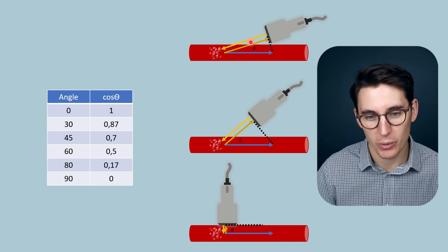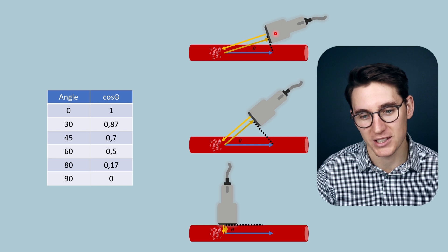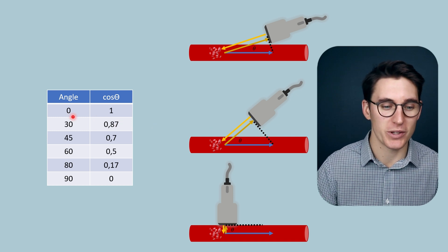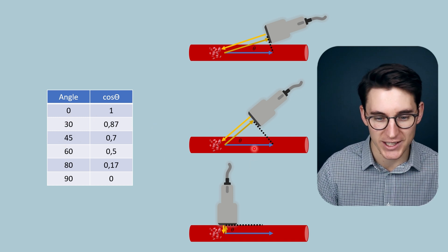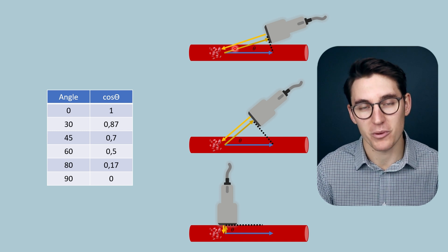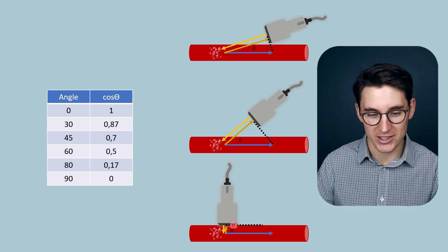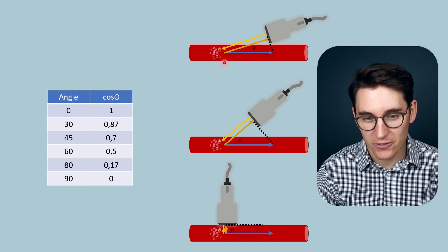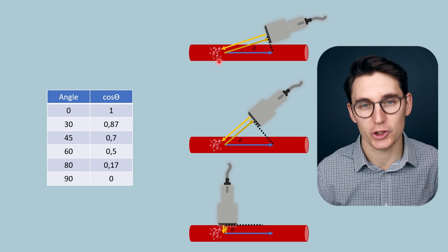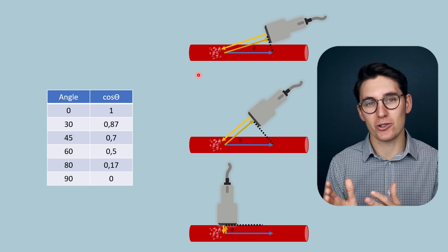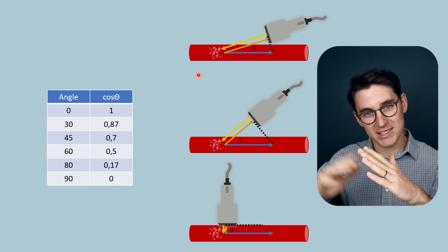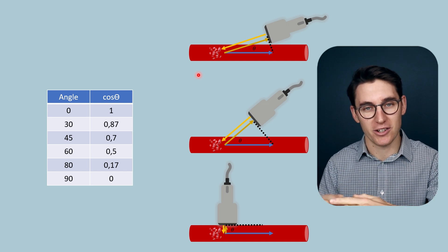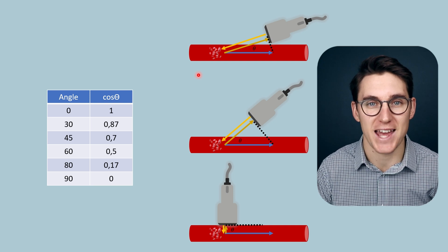At very steep angles we run into refraction problems, as the ultrasound wave must travel through the blood vessel wall. Generally we prefer an angle between 30 and 60 degrees to get an accurate calculation without refraction problems. This compensation for the angle of incidence using the cosine theta value is what's known as angle correction — the Doppler shift calculated at a certain angle is accounted for so that velocity can be accurately calculated.